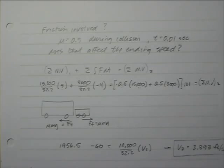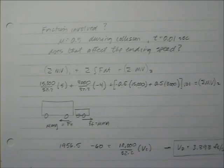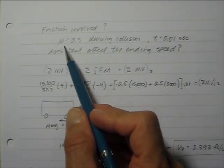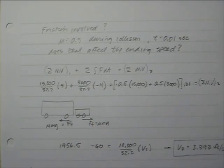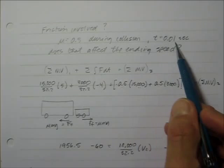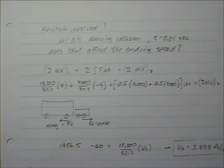What if friction was involved during the collision? Let's say both vehicles were standing on the brakes as they approached each other, with a coefficient of friction of 0.5 for each vehicle applied during the collision. The crash happens over one hundredth of a second, 0.01 seconds.